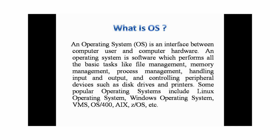An operating system is an interface between a computer user and computer hardware. We are using operating systems like Windows 7, Windows 8, and Linux. We have many examples of operating systems. An operating system is an interface between a computer user — that is us — and the computer hardware, which can be a monitor, CPU, or anything.